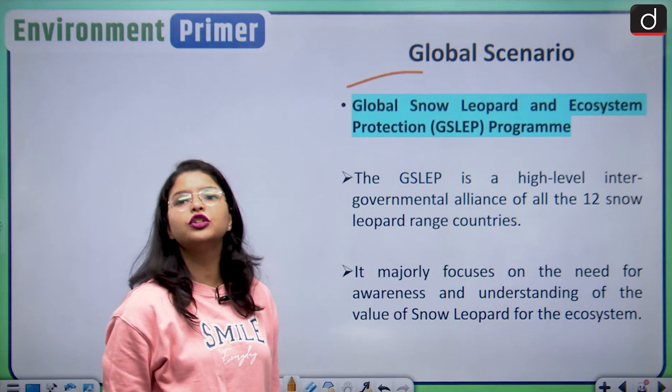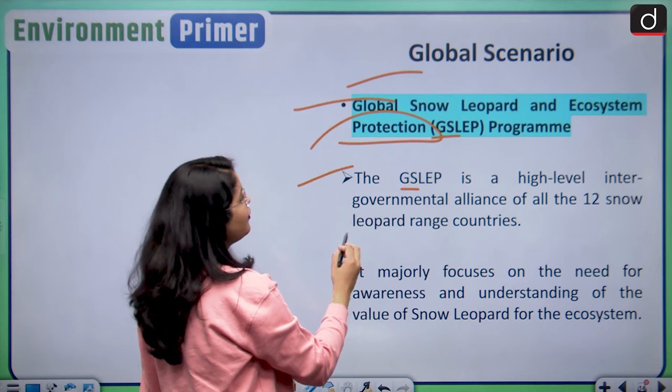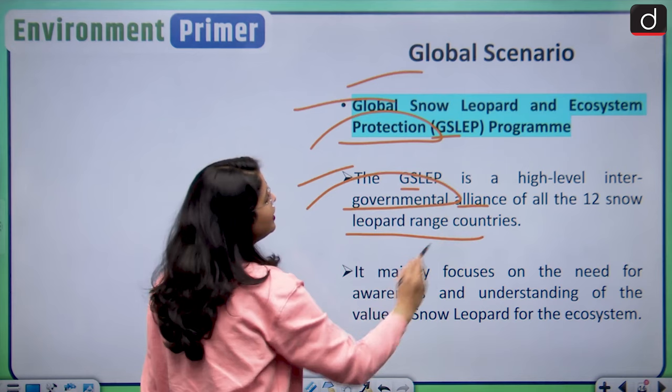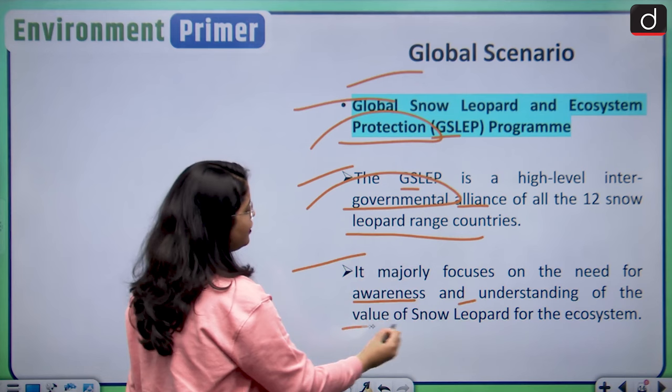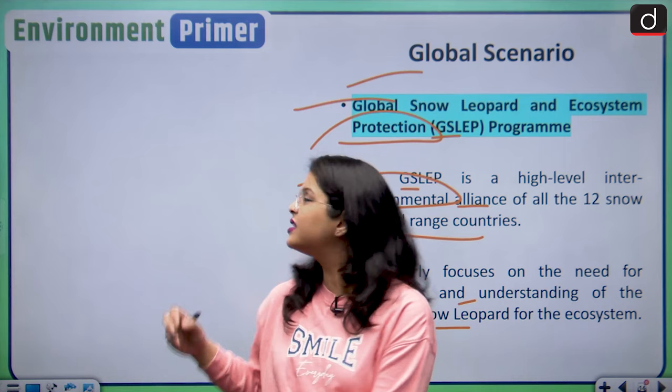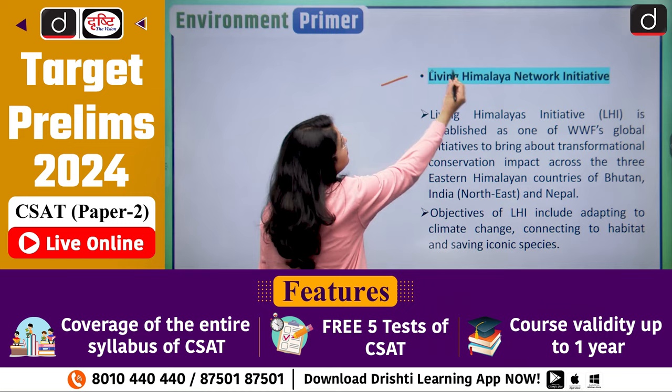Let us analyze the global scenario for the conservation of snow leopards. The Global Snow Leopard and Ecosystem Protection — GSLEP — Programme is a high-level intergovernmental alliance of all 12 snow leopard range countries. It majorly focuses on the need for awareness and understanding of the value of snow leopards for the ecosystem. India has been a member of this GSLEP programme since 2013.